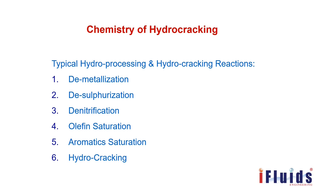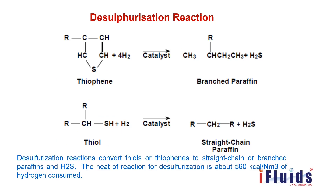Hydrocracking converts heavy hydrocarbon molecules that are not directly usable into value-added products like LPG, naphtha, diesel, and kerosene or aviation turbine fuel. In the desulfurization reaction, sulfur components attached to hydrocarbons — such as thiophene or thiol — are converted into hydrogen sulfide in the presence of hydrogen and catalyst under high pressure and temperature, consuming hydrogen. This is an exothermic reaction that releases a significant amount of energy.